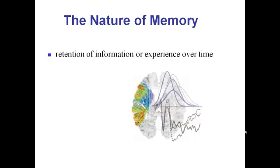Basically, the textbook definition of memory is the retention of information or experience over time. Information might be something you learn in a lecture — some facts, some concepts. But also memory involves your experience. Your experience of riding a bicycle is something you've experienced and have a memory of. It may not be something you can describe to someone, but it's nevertheless a memory — a memory of your experience, of where you were at a particular time and what you were doing. So it can be both information and experience.